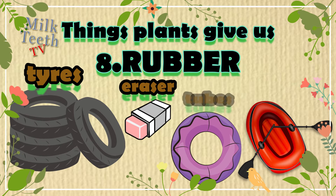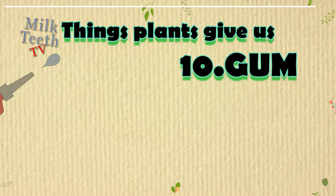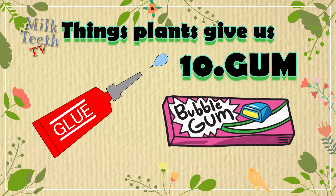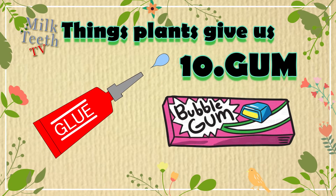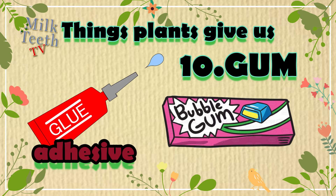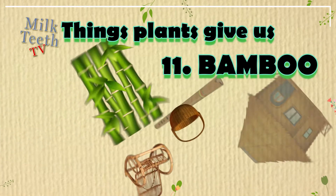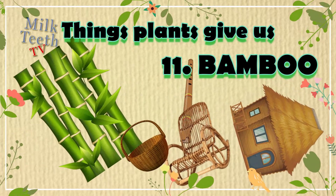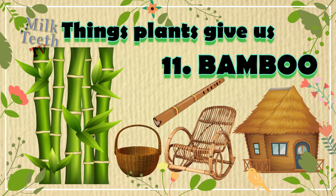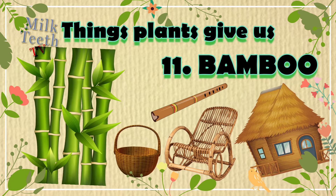Number ten: gum. We get natural gum from plants that can be used to make adhesives and also chewing gum. Number eleven: bamboo. We also get bamboo from plants. Bamboo is a very useful plant item.